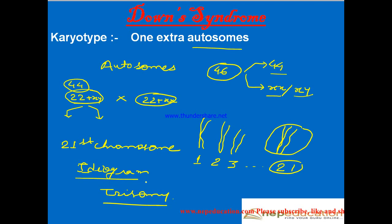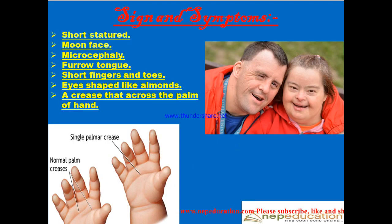Now for Down Syndrome signs and symptoms — here you can see: there is short stature, moon face (that is, the face is not elongated, it is near about spherical in shape), microcephaly (the brain becomes small in size, the head becomes small), furrowed tongue, short fingers and toes, and the eyes are shaped like almonds — you can observe the almond eye shape here.